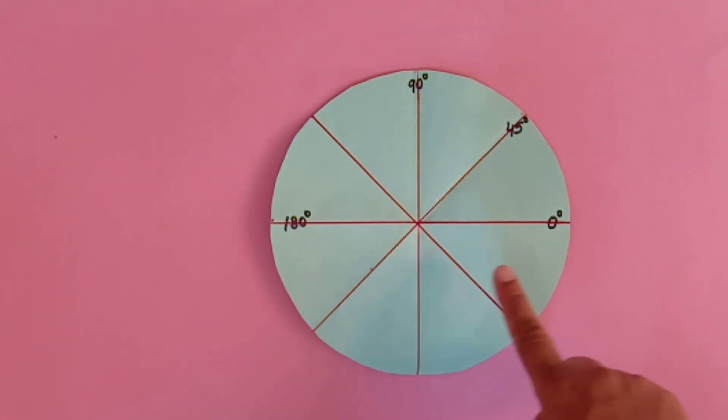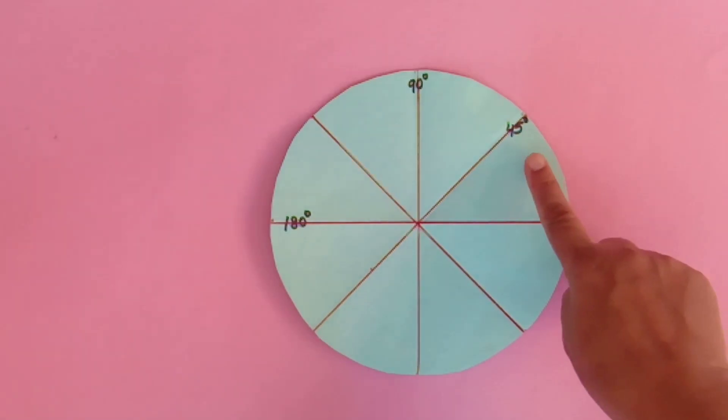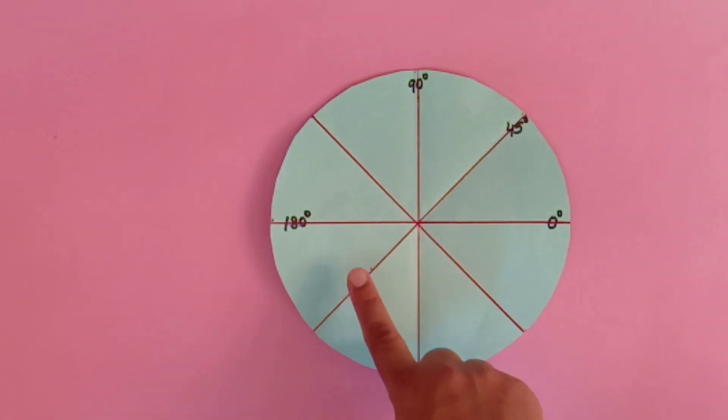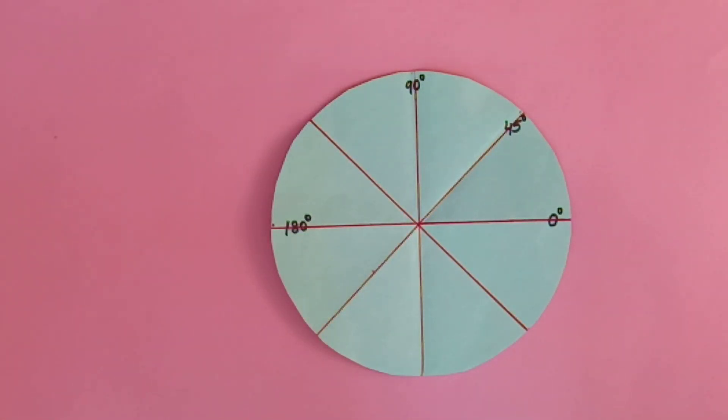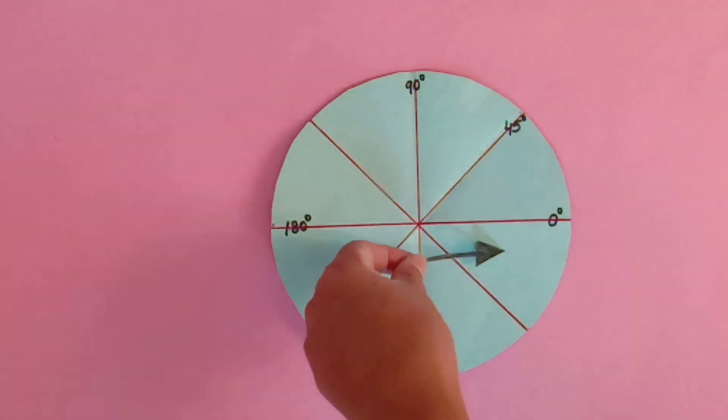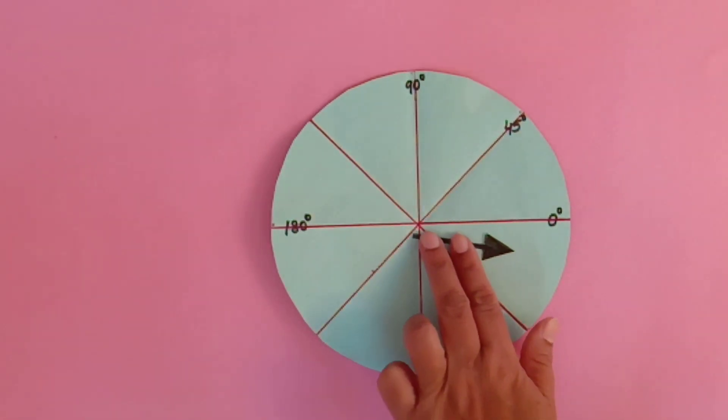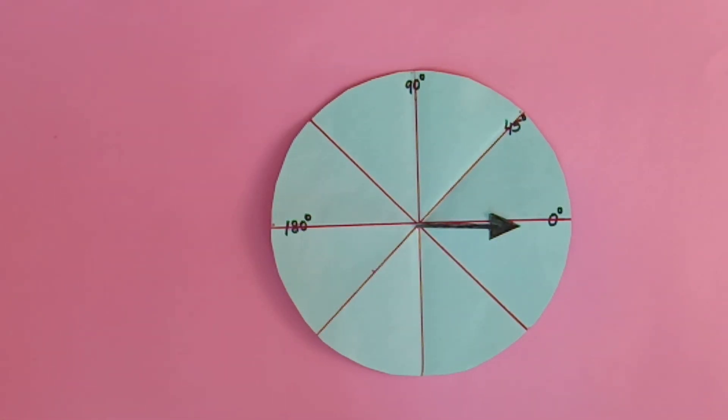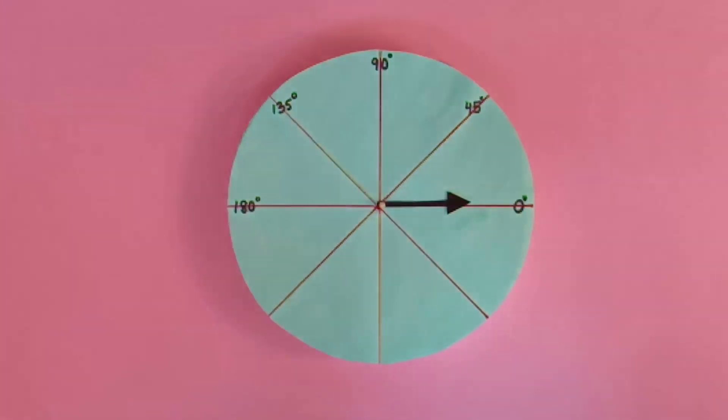As you see, we have written angles on our degree clock. Now we will make an arm for our degree clock. We will fix our arm with the help of pin on the degree clock and paste our degree clock on a cardboard. Now our degree clock is ready.